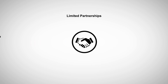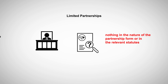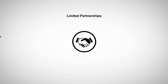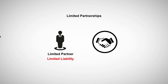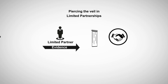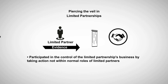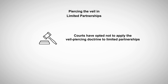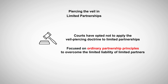As for limited partnerships, courts have held that there is nothing in the nature of the partnership form or in the relevant statutes that would preclude application of the veil-piercing doctrine to limited partnerships. Keep in mind that in a limited partnership only the limited partner has limited liability. Piercing the veil in limited partnerships typically requires evidence that the limited partner participated in the control of the limited partnership's business by taking action not within the normal roles of limited partners, or that limited partners dominated the limited partnership or used it to perpetuate a fraud, injustice, or otherwise circumvent the law. In some cases, however, courts have opted not to apply the veil-piercing doctrine to limited partnerships, instead focusing on ordinary partnership principles to overcome the limited liability of limited partners.